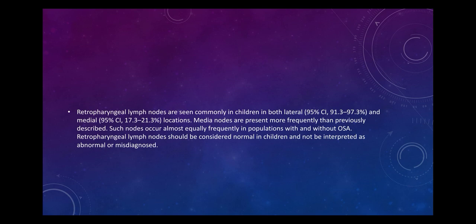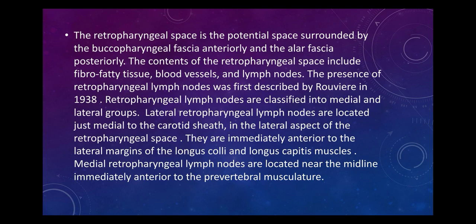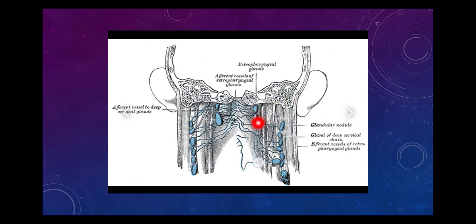Retropharyngeal lymph nodes should be considered normal in children and not interpreted as abnormal. The retropharyngeal space is the potential space surrounded by the buccopharyngeal fascia anteriorly and the alar fascia posteriorly, containing fibrofatty tissue, blood vessels, and lymph nodes. The presence of retropharyngeal lymph nodes was first described by Rouvier in 1938. Lateral retropharyngeal lymph nodes are located just medial to the carotid sheath, immediately anterior to the lateral margin of the longus colli and longus capitis muscles. Medial retropharyngeal nodes are located near the midline immediately anterior to the prevertebral musculature.